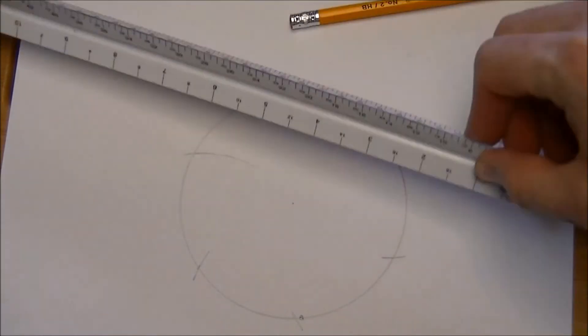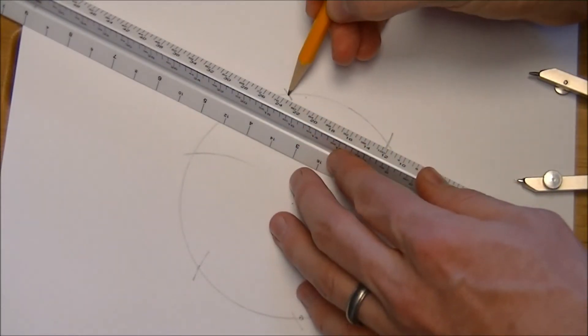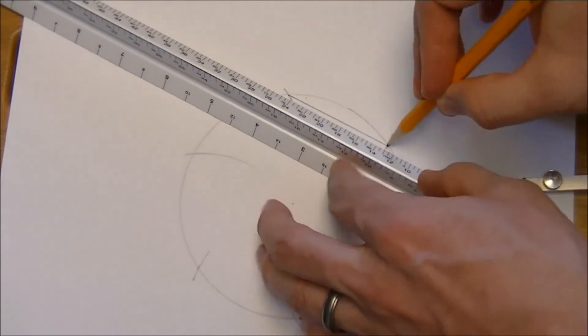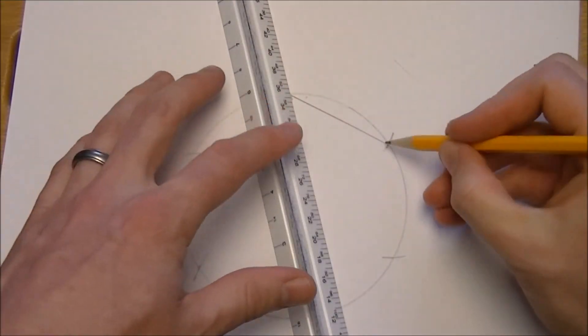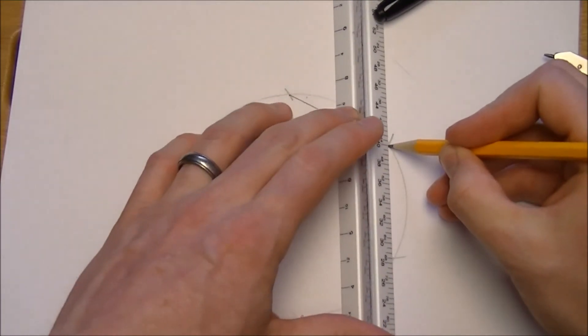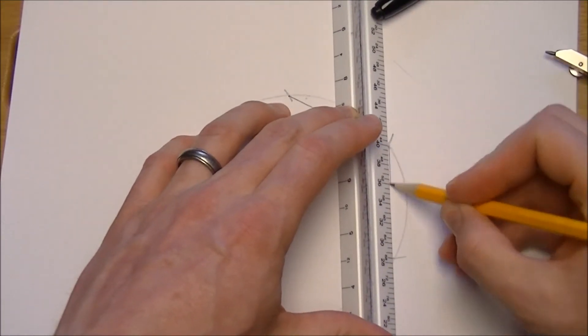But again, with a hexagon, it's pretty straightforward. And then we'll just connect the intersections of those marks that we made with the compass, and where they intersect with the circumference of the circle.